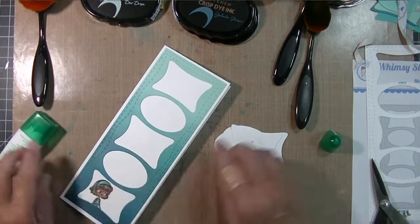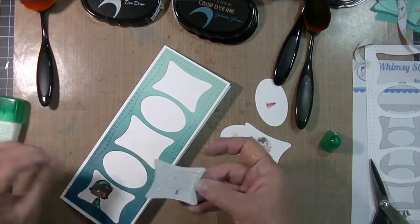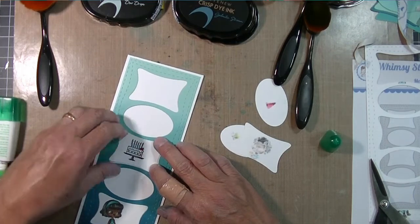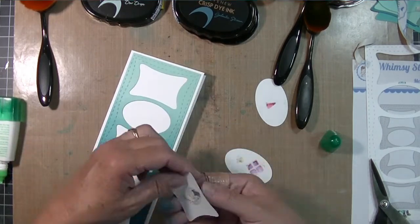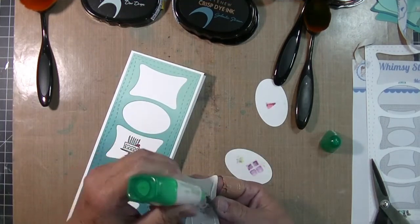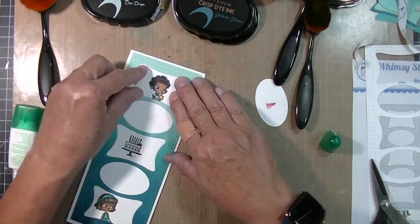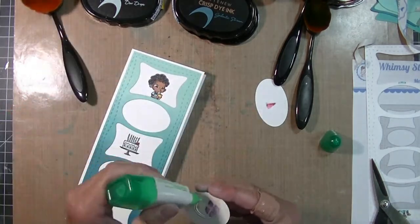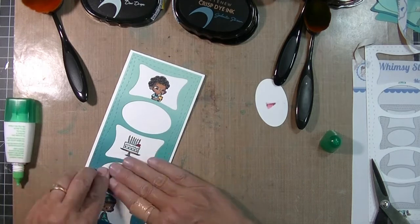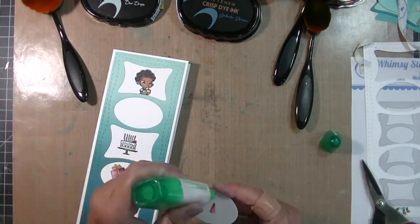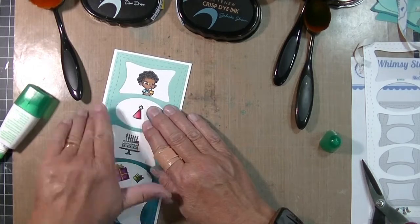So now I'm just using some liquid glue to adhere these back in. I don't want to create a lot of dimension on the card. For some reason lately I've liked less dimension. So I've been adhering things flat to the card base. So that's what I'm doing. And that is going to complete my card.